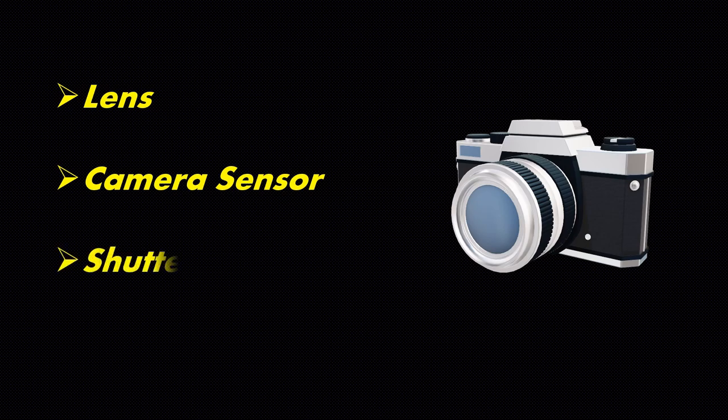Hi all! We will begin with camera today. Camera usually consists of a lens through which light is focused onto the camera sensor. Amount of light entering is controlled by the shutter.